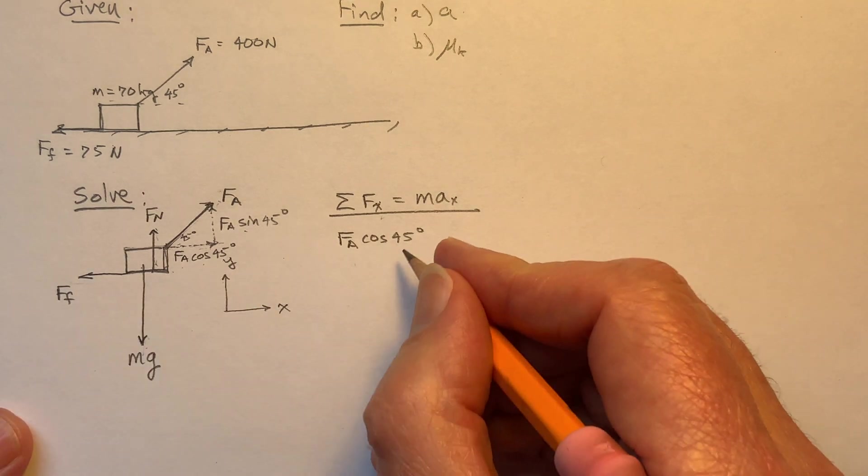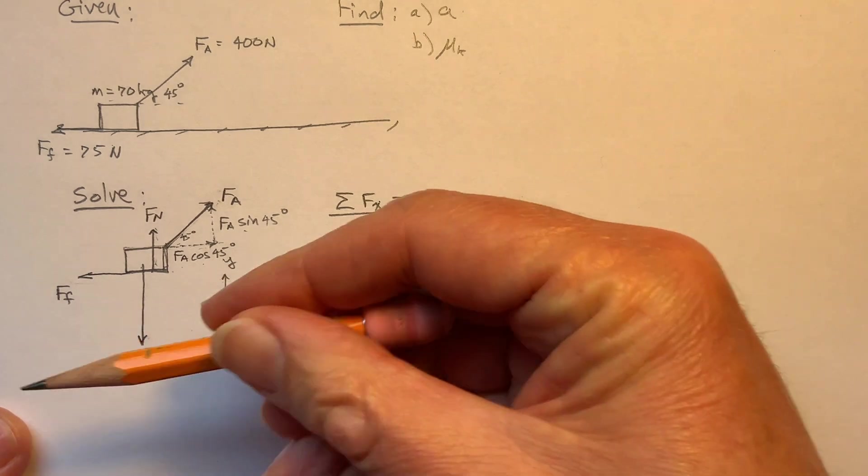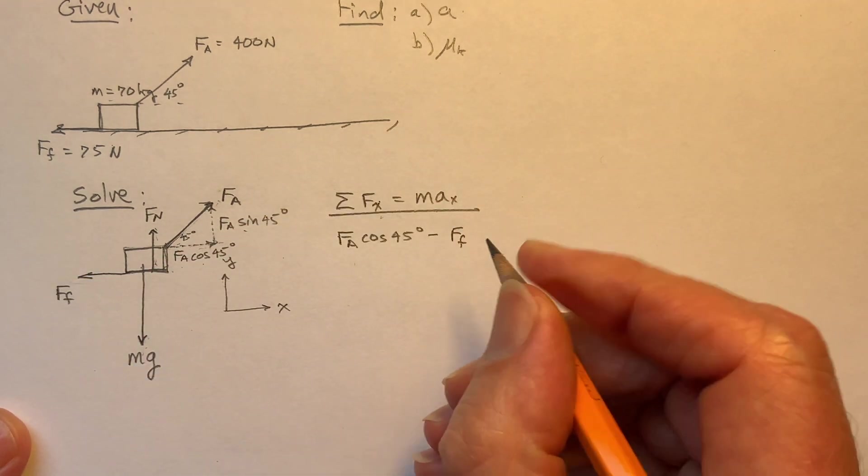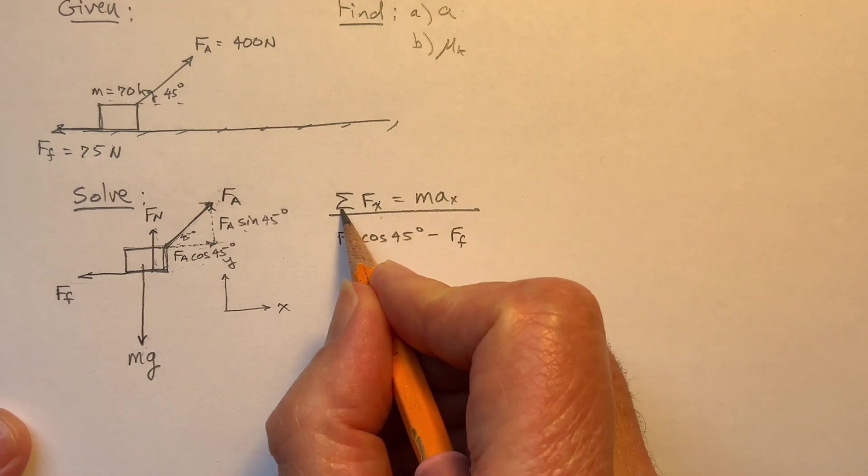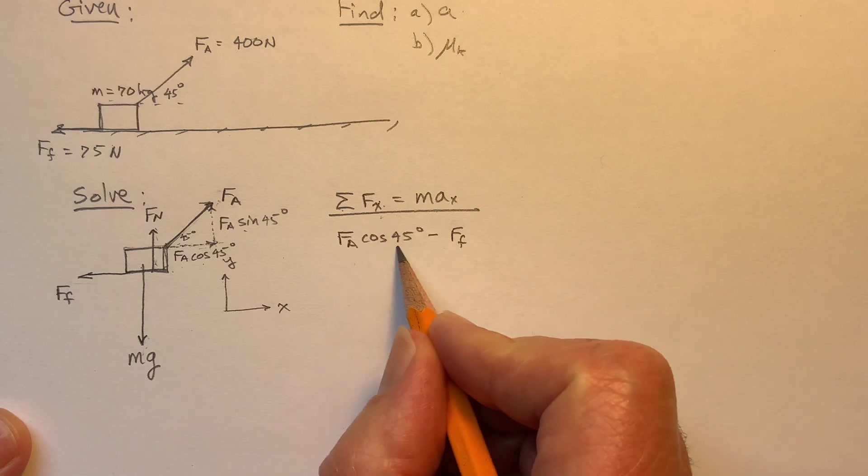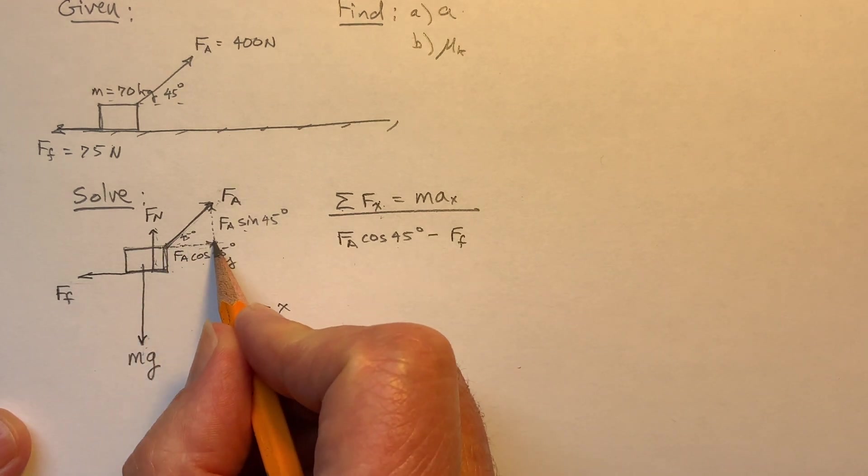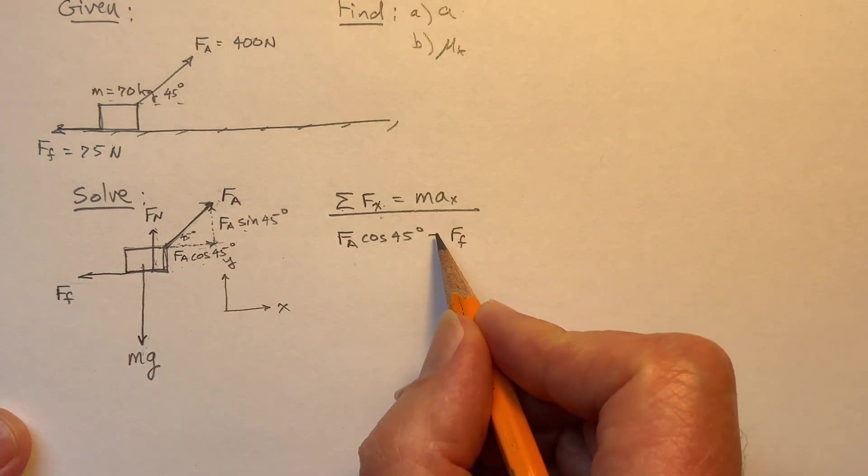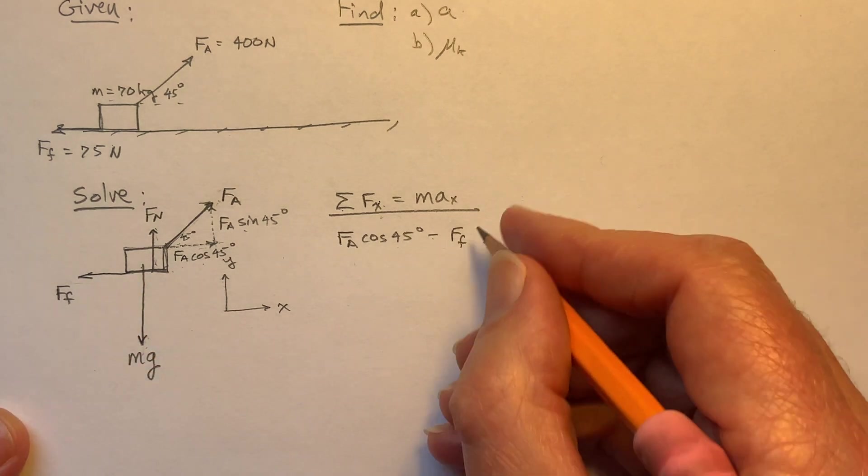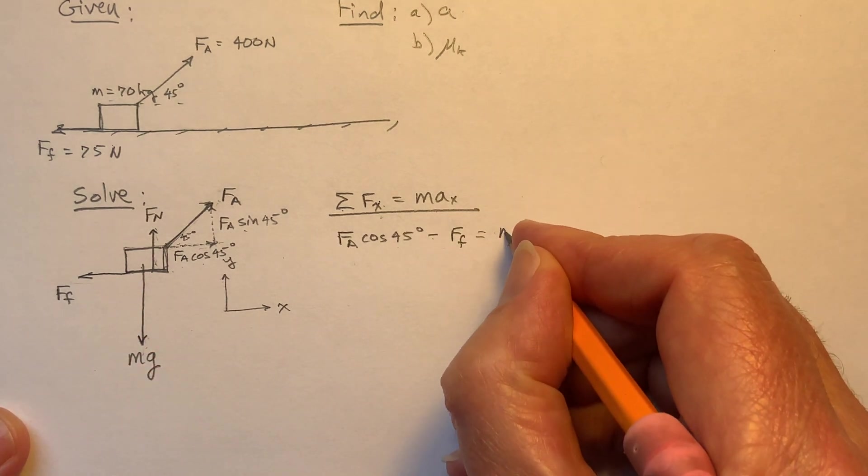Okay, and then minus, and minus because it's in the negative direction, the force of friction. So we've just summed all the forces. These are the only two forces in the x direction. We have this minus this. This is in the positive x direction. And this is minus because the force of friction is in the negative x direction. And that's going to equal ma.